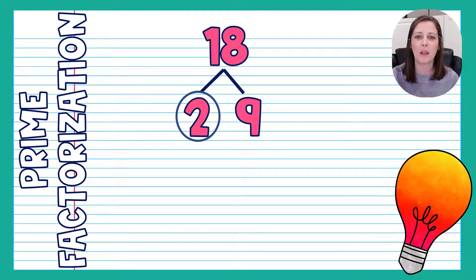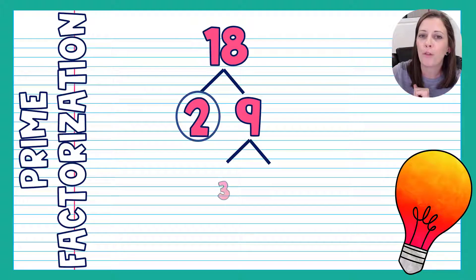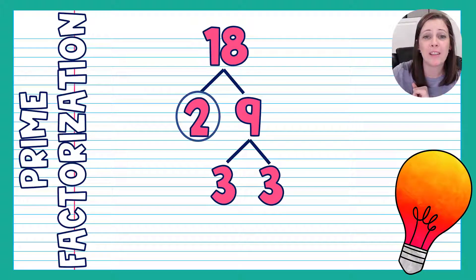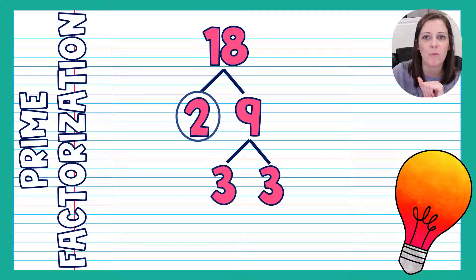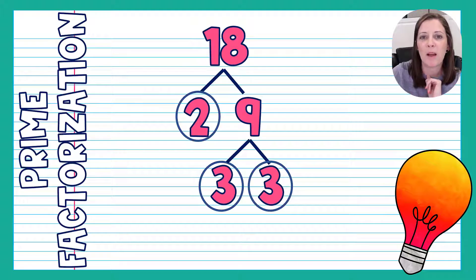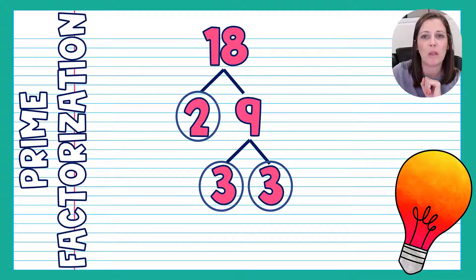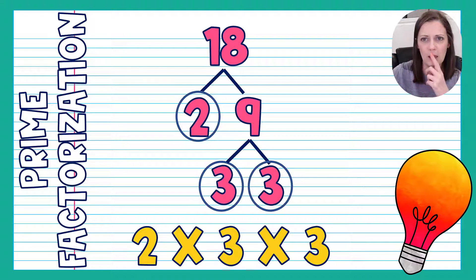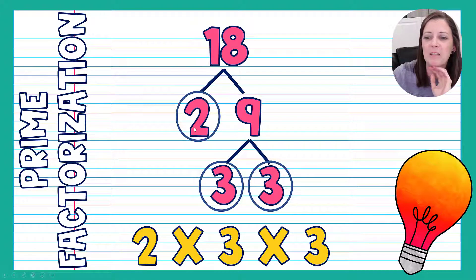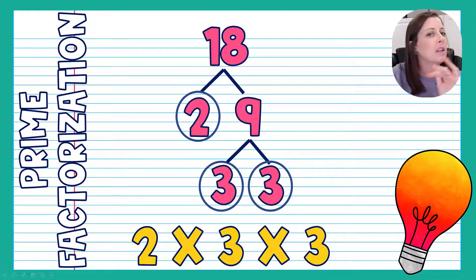Now looking at 9: is it prime or composite? Nine is composite because I can break it down into 3 times 3 — not just 1 times 9. So now I have two new branches. Is 3 prime or composite? Three is prime — it was our example earlier, and the only way to get it is 1 times 3. I circle both threes, and now all circles are done. Writing out my prime factorization from least to greatest: 2 times 3 times 3. Checking: 2 times 3 is 6, and 6 times 3 is 18 — back to the original number.